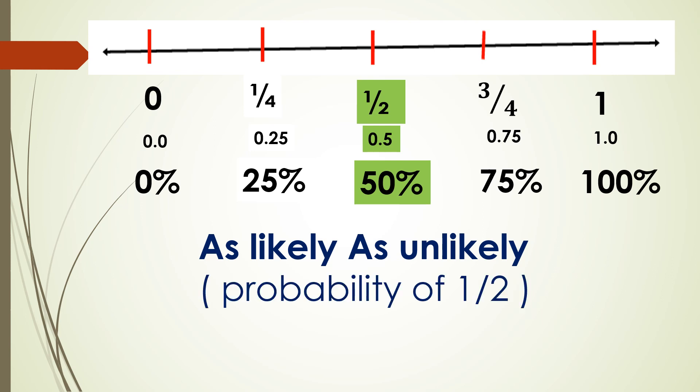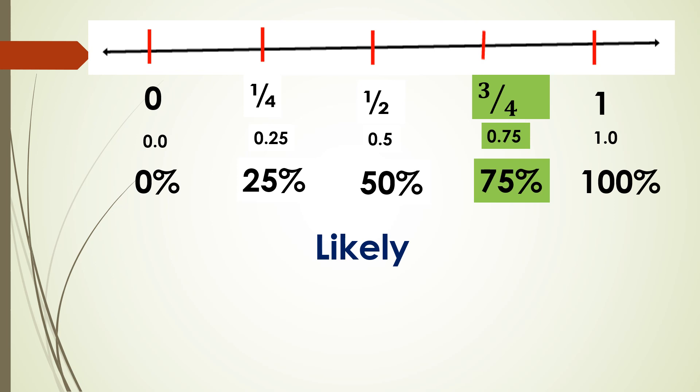Next we have as likely as unlikely. This is the probability of 1/2. This is also called the 50-50 chance. In this particular situation, the probability that something may happen equals the probability that it may not happen.